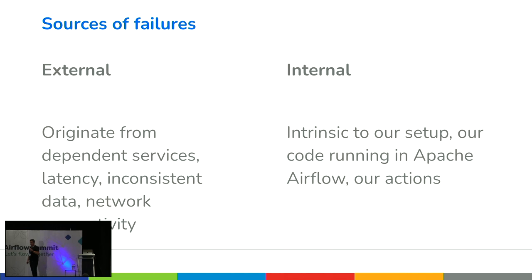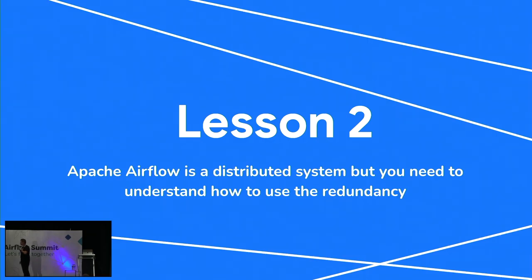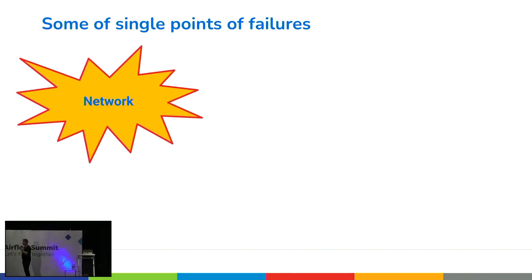Secondly, there are issues you have control over — intrinsic to your setup. It's your code, your setup, and also Airflow itself and how it works. Our actions could be something like dropping a database table. From lesson one: Airflow is a distributed system, so we need to learn how to use redundancy correctly to help with the challenges of running tasks reliably. But does redundant mean problem solved? Unfortunately, not always, because there are certain single points of failure — network being the most obvious one.